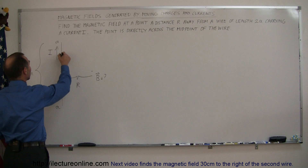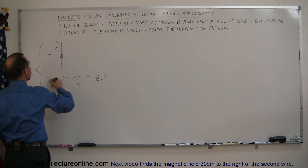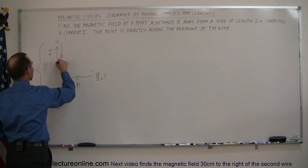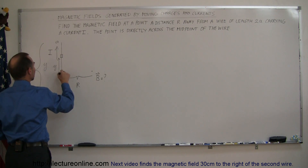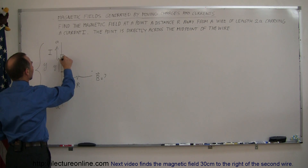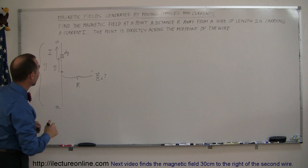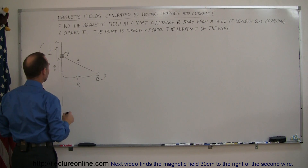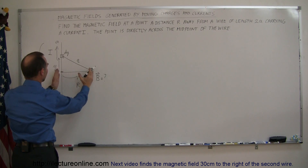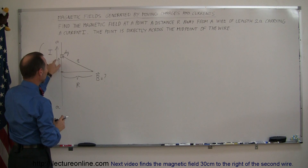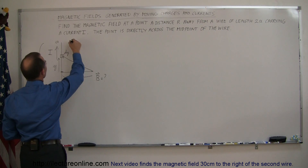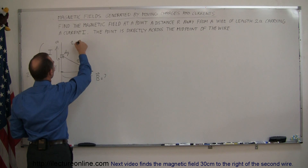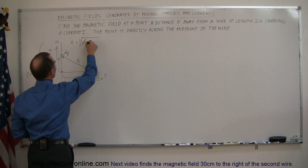To do that, we take a small segment. The vertical direction is y, and the line segment we're considering is a distance y away from the midpoint. The length of this little segment is dy. That segment will be a distance little r away from the point of interest, the horizontal distance from the wire to the point is big R, and the vertical position along the wire is y. So little r, the hypotenuse, equals the square root of R squared plus y squared.